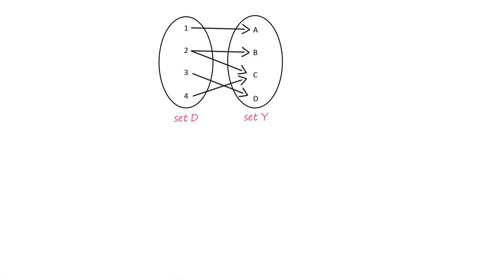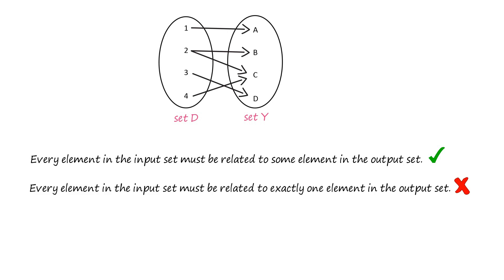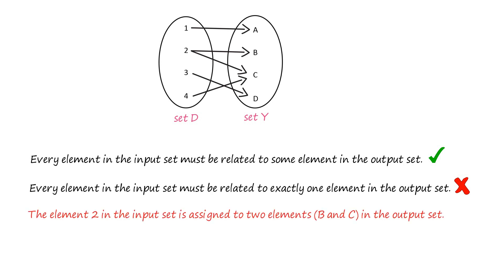Consider the sets D and Y related to each other as shown. Again, pause this video and try to figure out if this relation is a function. Clearly, every element in the set D is related to some element in the set Y. But every element in the set D is not related to exactly one element in the set Y. The element 2 in the input set is assigned to two elements, b and c, in the output set. So the given relation is not a function.